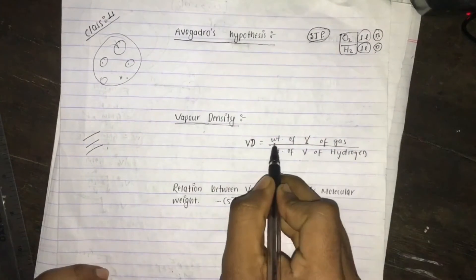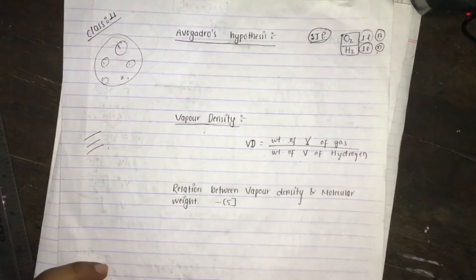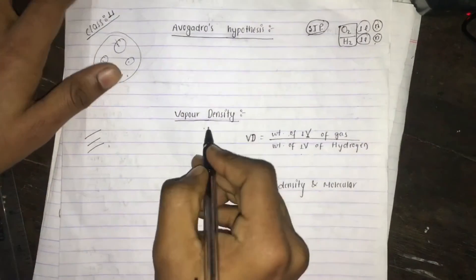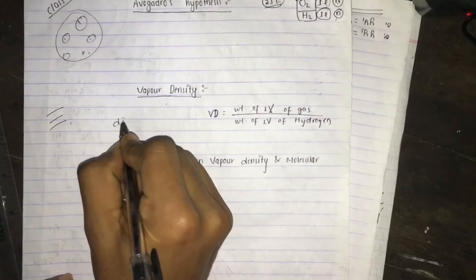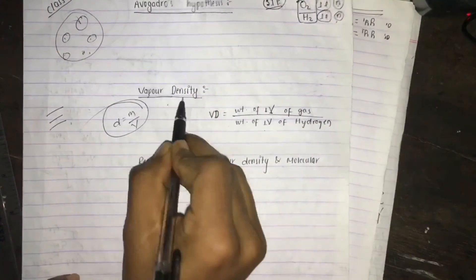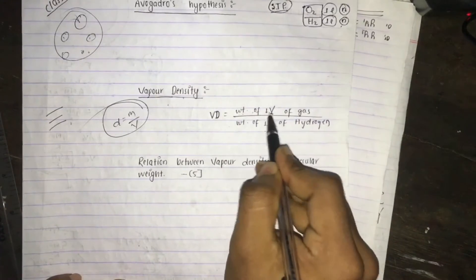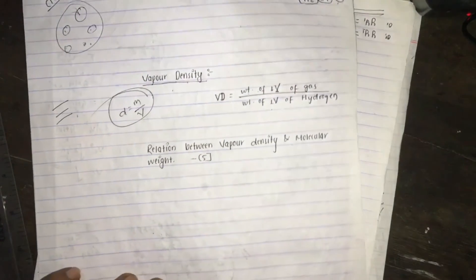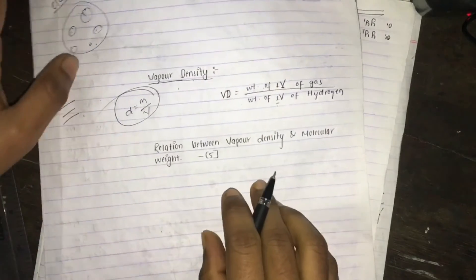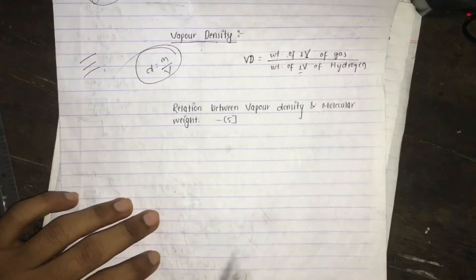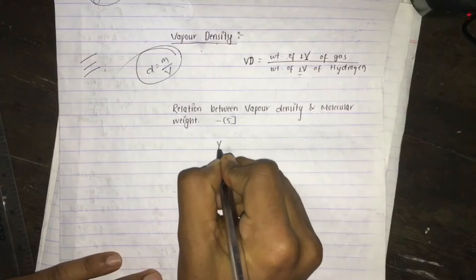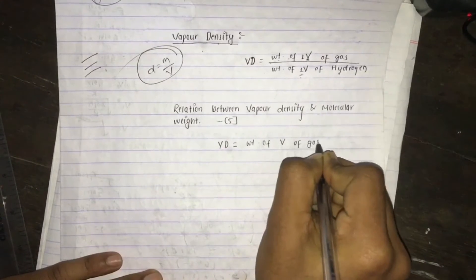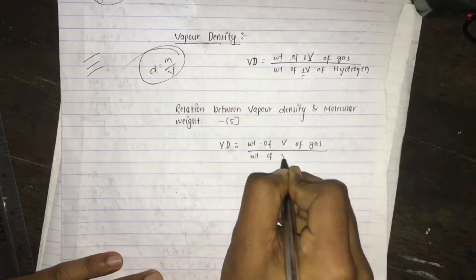We know that vapor density is equal to the weight of a volume of gas divided by the weight of the same volume of hydrogen.